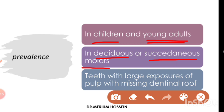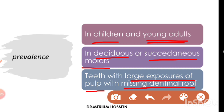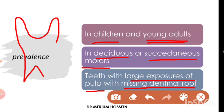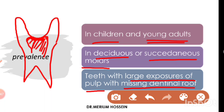Most commonly, the condition involves teeth that have large exposed pulp tissue and a missing dentinal roof. For example, in a cavitated molar where the pulp chamber is exposed and there is no dentinal roof present, it is possible for the pulp tissue to expand and spread into the dentinal defect after the hyperplastic change.